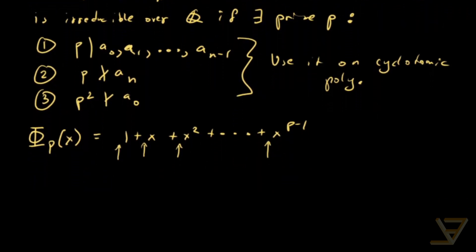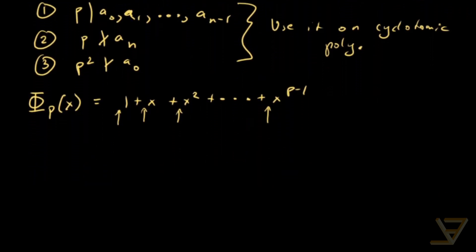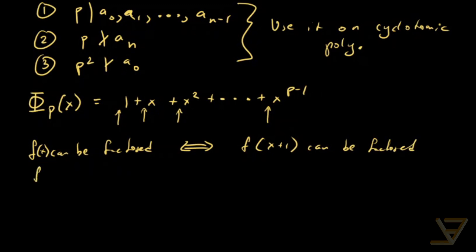But we can bring in an insight which is that f can be factored if and only if f(x+1) can be factored. Which means f(x), by contrapositive, is irreducible if and only if f(x+1) is irreducible. And one can be replaced by any other rational number, but one is going to be the most useful thing for us here.